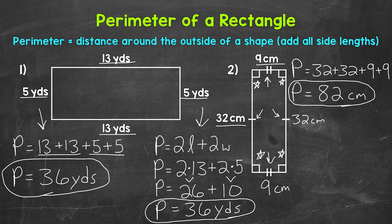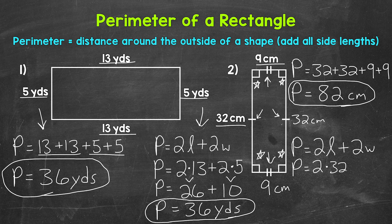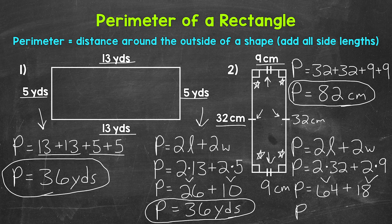Now let's also use the formula — 2 times the length plus 2 times the width. Using 32 for the length and 9 for the width: perimeter equals 2 times 32 plus 2 times 9. 2 times 32 is 64, plus 2 times 9 is 18. 64 plus 18 gives us a perimeter of 82 centimeters. So we get the same perimeter that way as well.